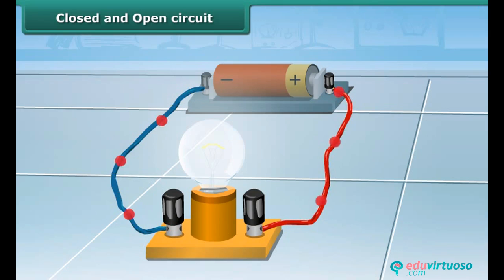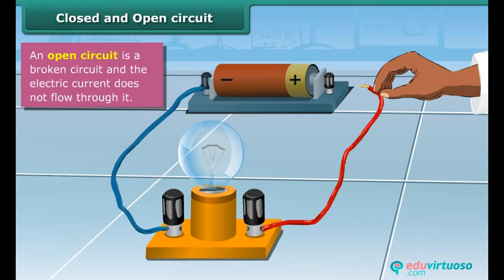Disconnect one of the wires. You will find that the path is broken now. Also, the bulb doesn't light up since electricity can't flow through this circuit. A broken path is known as an open circuit.